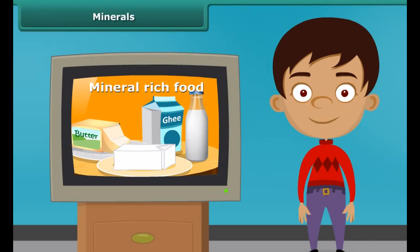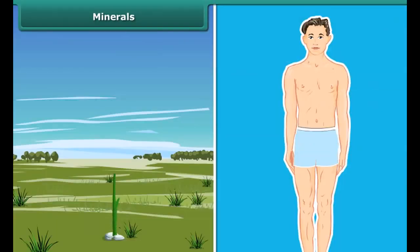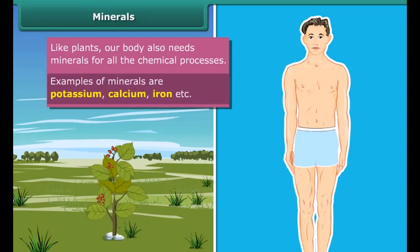You might have seen many advertisements of mineral-rich food items. Plants need minerals for growth; besides this, a body also requires minerals in small quantities for all the chemical processes. Potassium, calcium, iron etc. are some common examples of these minerals. Let us know more about the sources and the role of these minerals using the next table.